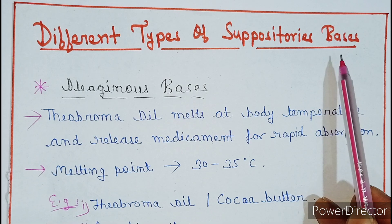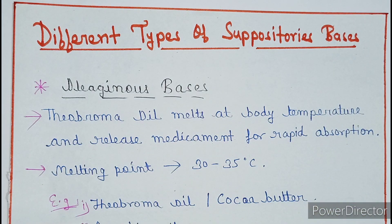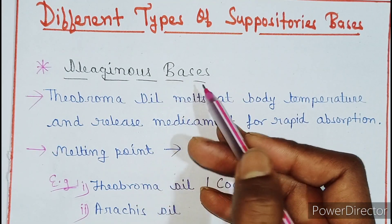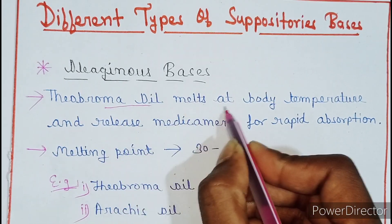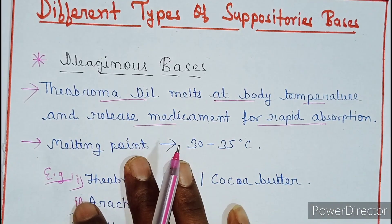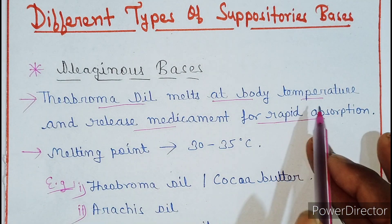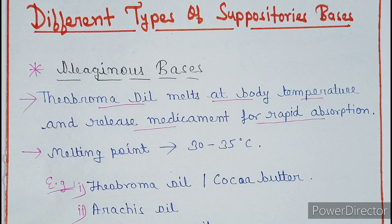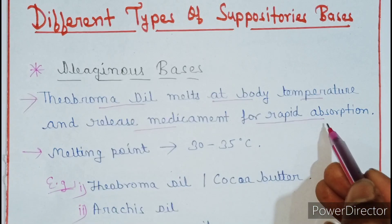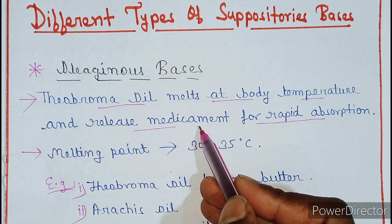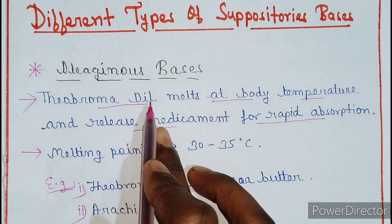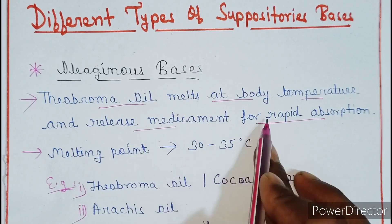The first one is oleaginous bases. Oleaginous bases are those which melt at body temperature, around 37 degrees Celsius, and release the medicament for rapid absorption. Medicament means a substance which is used for medical treatment. So theobroma oil melts at body temperature and releases the medicament for rapid absorption.